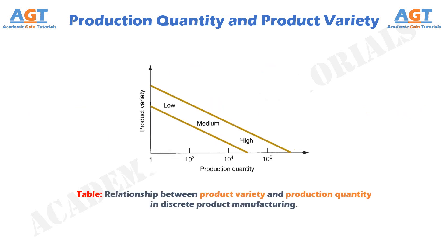There is an inverse correlation between product variety and production quantity in terms of factory operations. If a factory's product variety is high, then its production quantity is likely to be low; but if production quantity is high, then product variety will be low, as depicted in this figure. Manufacturing plants tend to specialize in a combination of production quantity and product variety that lies somewhere inside the diagonal band in this figure. Although product variety has been identified as a quantitative parameter — the number of different product types made by the plant — this parameter is much less exact than production quantity, because details on how much the designs differ are not captured simply by the number of different designs.